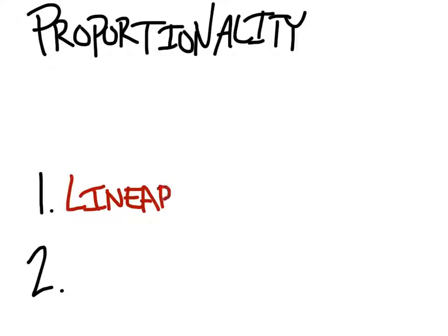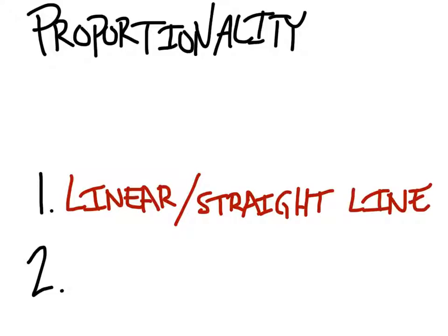Linear also means that it is a straight line. Very good. What is the second thing that you need? Cooper. Has to go through the origin.